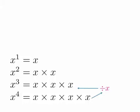So to get from x to the fourth to x to the third, we divide by x. And to get from x to the third to x squared, x squared to x to the first.